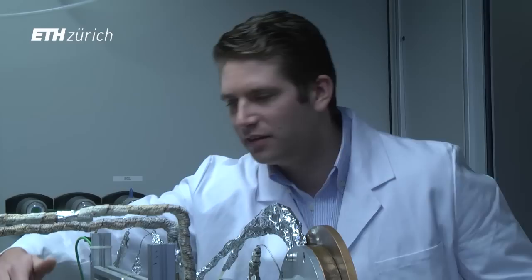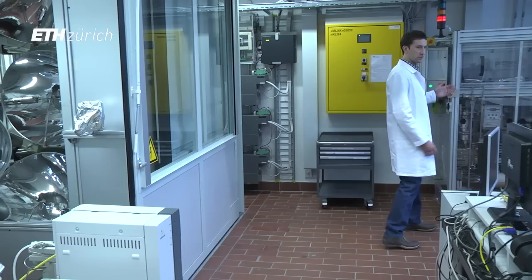The syngas produced by the solar reactor is first analyzed for its composition, and then flows to the compressor station, where it is first stored, and then finally compressed to 150 bars in such a gas cylinder.